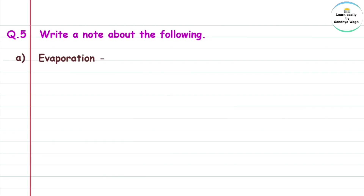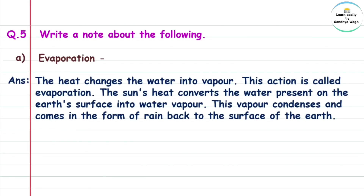Question 5: Write a note about evaporation. Evaporation means the process by which heat changes water into vapor. The heat converts water into water vapors — this action is called evaporation. The sun's heat converts the water present on the earth's surface into water vapor. This vapor then condenses and comes back to the surface of the earth in the form of rain.